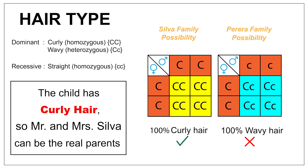Let's consider the final trait: hair type. Hair type is a deviation of Mendelian genetics — it is incomplete dominance. The dominant homozygous trait is curly hair, the dominant heterozygous trait is wavy hair, and the recessive trait is straight hair. According to the Punnett chart, there is a 100% possibility of the Silva family being the real parents, because the Pereira family cannot produce a curly-haired child. Therefore, there is a higher possibility of the Silva family being the real parents.